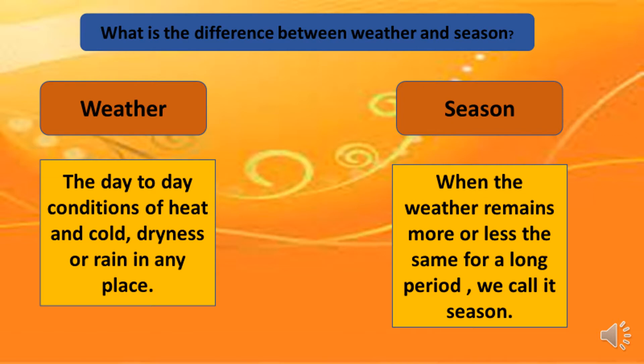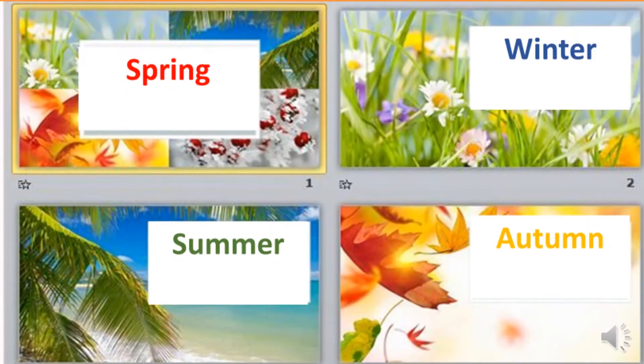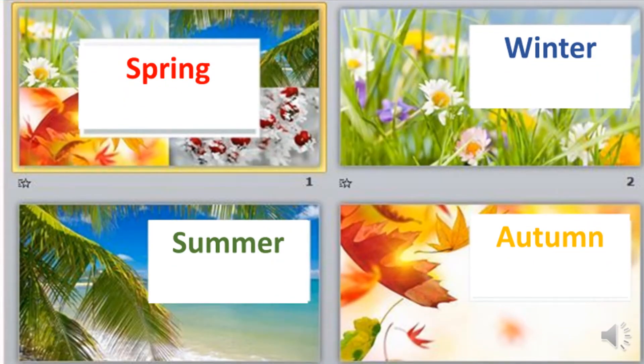Do you know how many seasons are in a year? Yes, there are four seasons in a year: spring, summer, autumn, and winter.